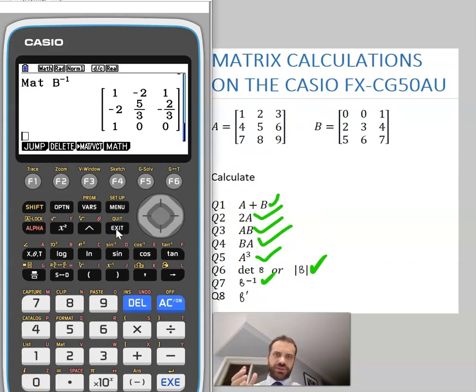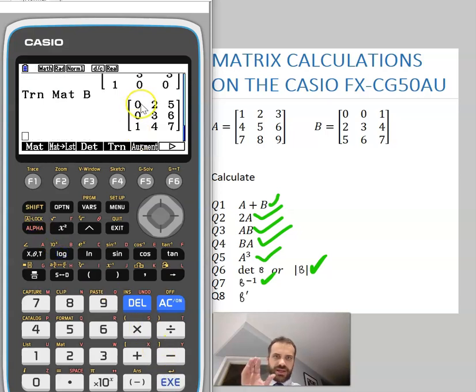And finally, that brings us to the transpose. If we just go into options, MAT VCT transpose TRN, and then we're going to do matrix B. And you can see that is the transpose, the rows and the columns have swapped over. Those are some matrix calculations on your Casio.